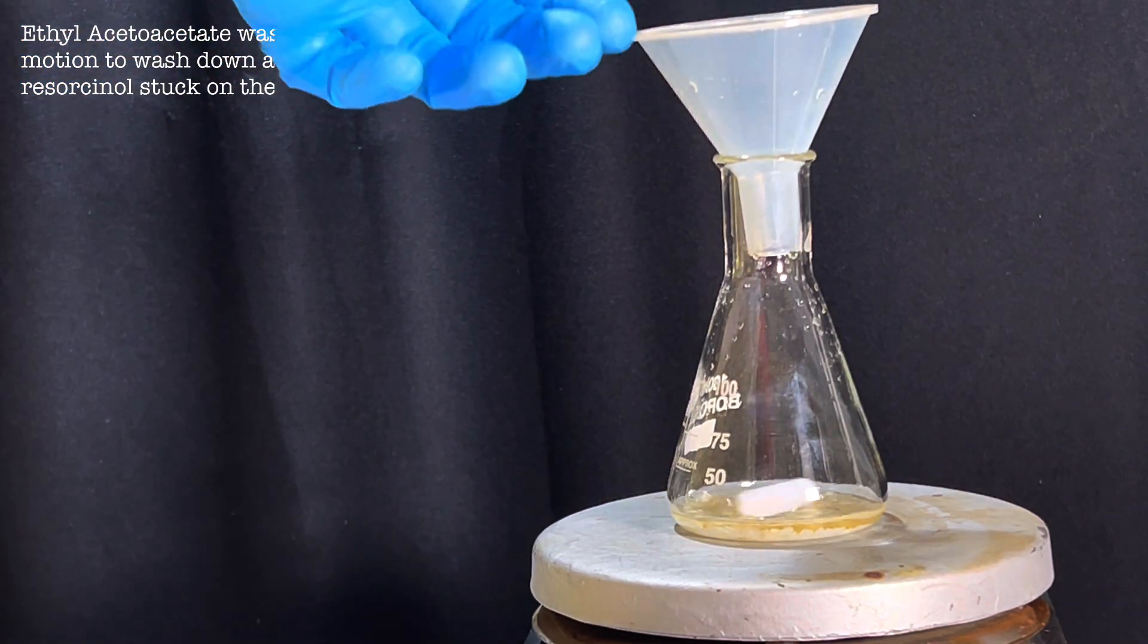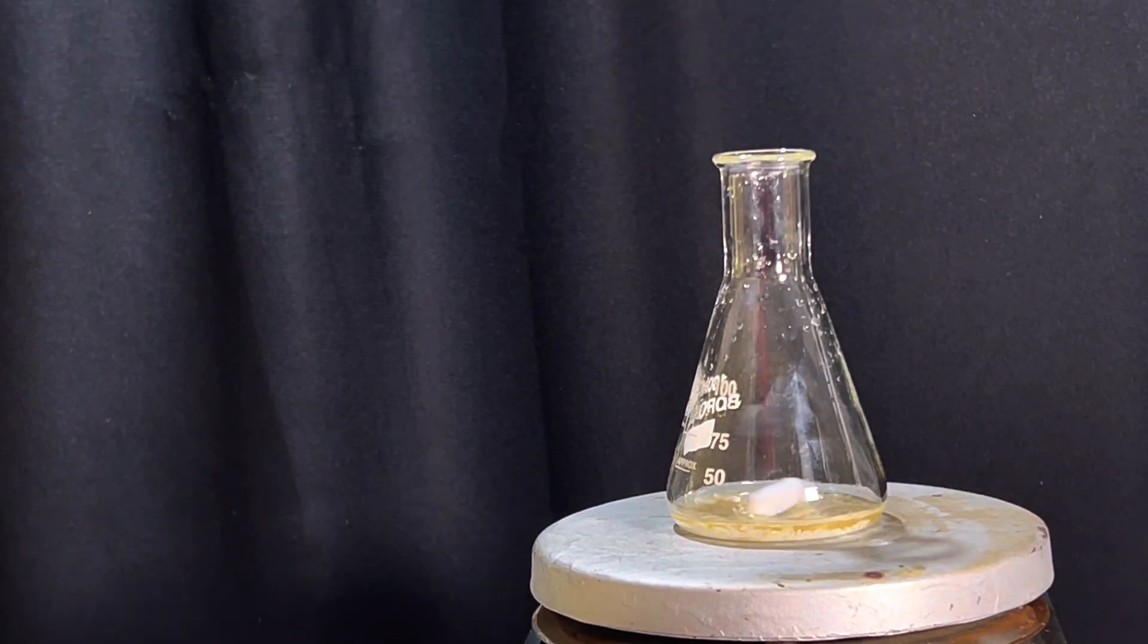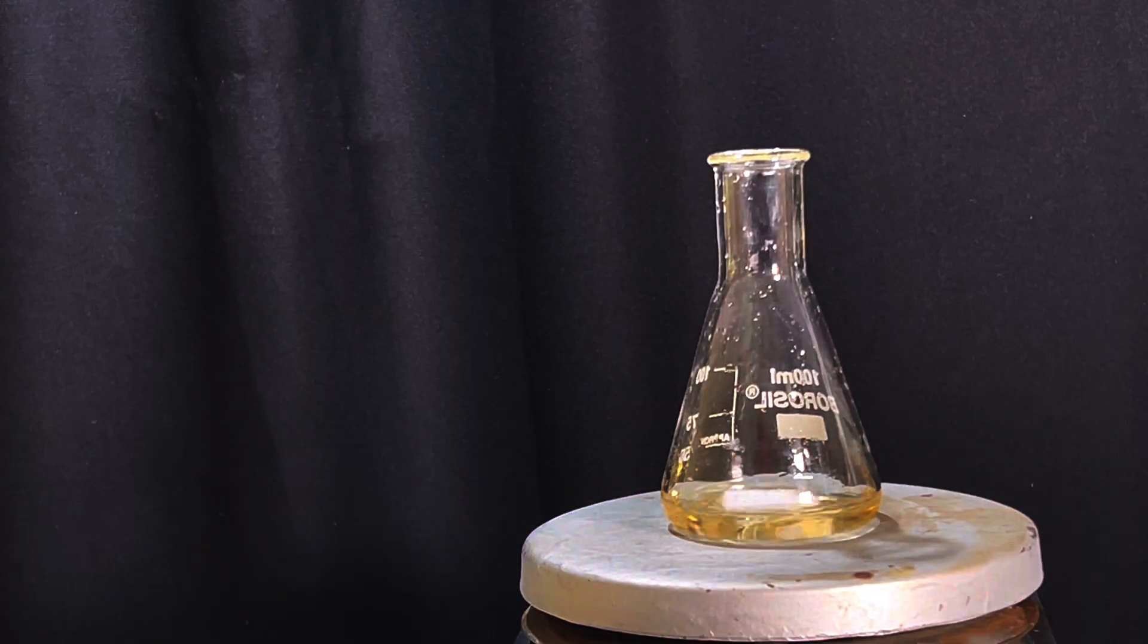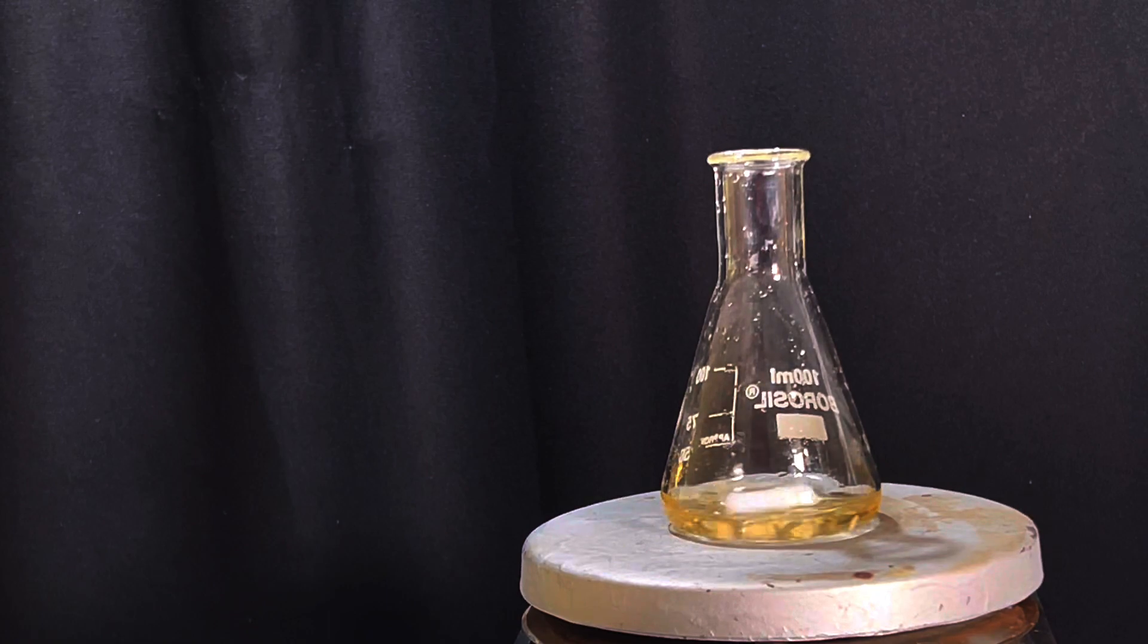With the stirring turned on, resorcinol is dissolved in ethyl acetoacetate. Once everything is dissolved, we are left with a dark yellow clear solution.